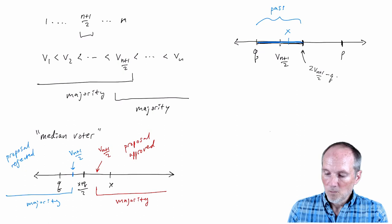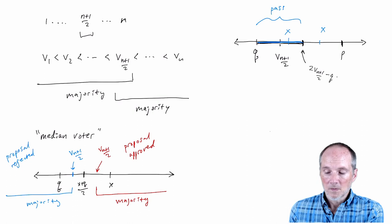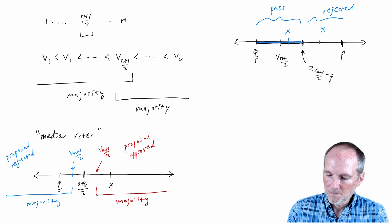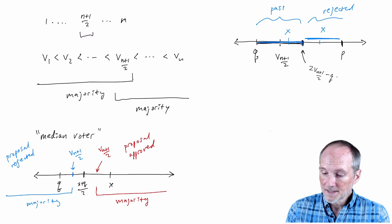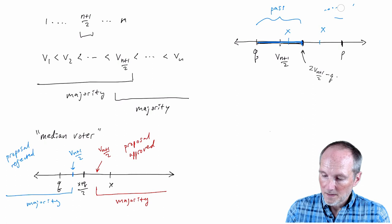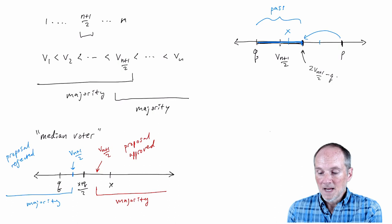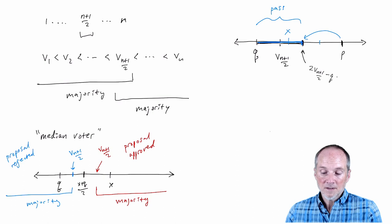What if a proposal outside that interval is made? It's further from the median voter than the status quo, so the median voter votes to reject. Since the median voter is pivotal, a majority also rejects — these proposals are rejected. So if you are the politician, your optimal proposal is to propose the right-hand endpoint of that acceptance interval. It's the same solution as in the previous installment with a single voter — the only difference now is that we're isolating the median voter who turns out to be pivotal.